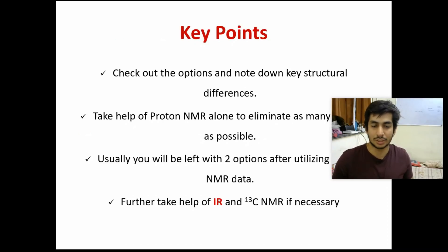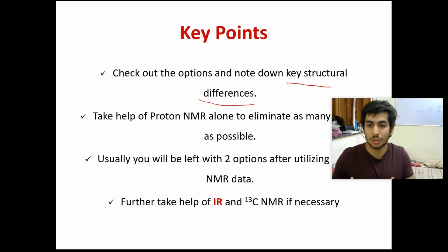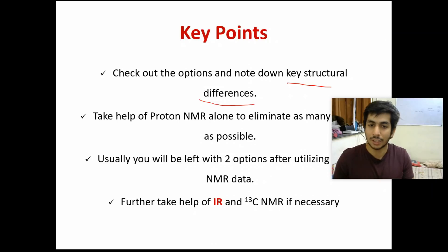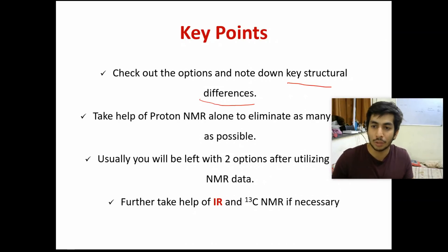Let's discuss the four key points and see how to execute them. Point number one, and the most important: check out the options and note down the key structural differences. What students generally do is look at the chemical shift data or IR stretching frequency first, then look at the options — that is wrong. Whenever doing structural elucidation questions, the first thing you need to see is the key structural differences between the four options given.